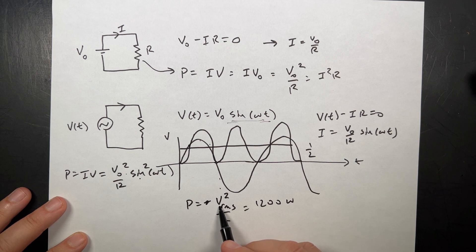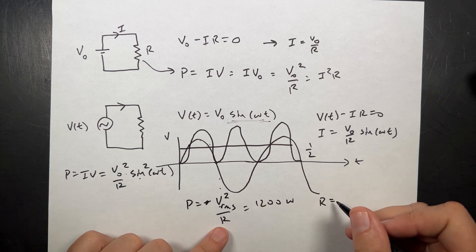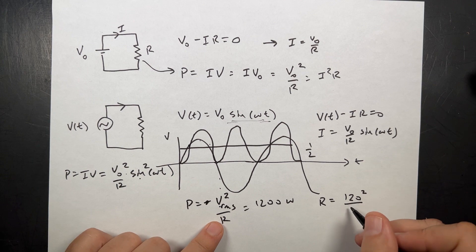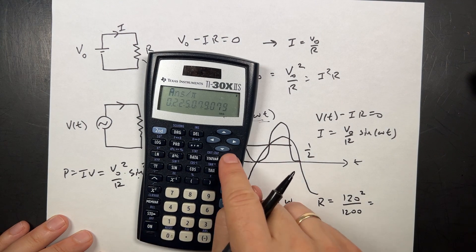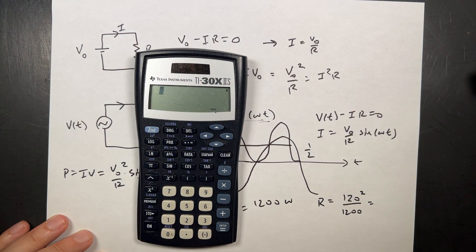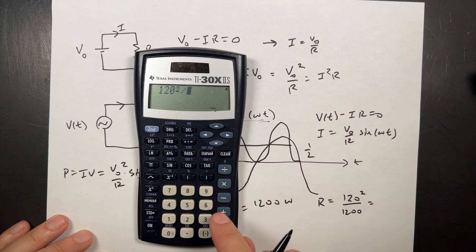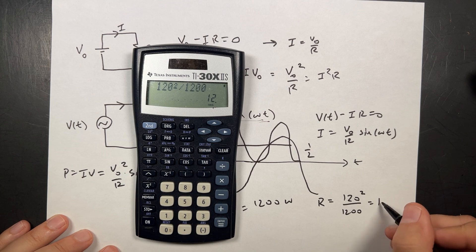So R is going to be equal to the RMS voltage, 120 squared over 1,200 watts. Let me put that in my calculator. 120 squared divided by 1,200, and I get 12 ohms.